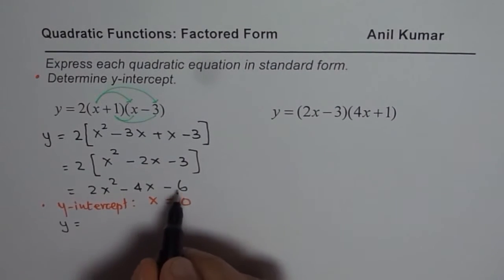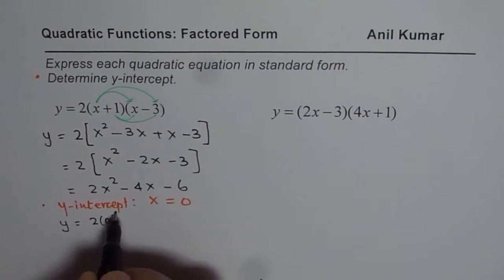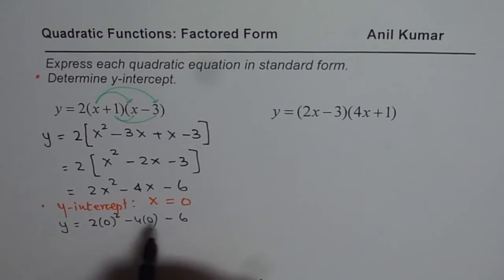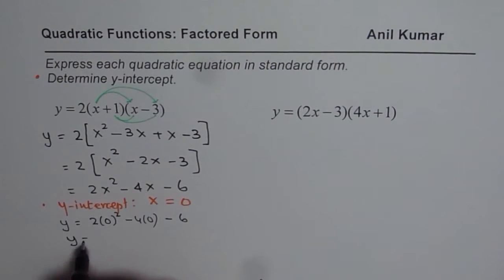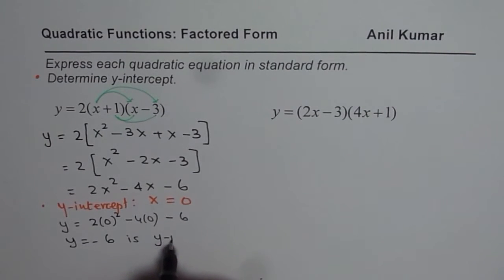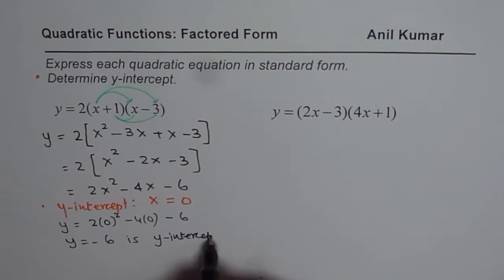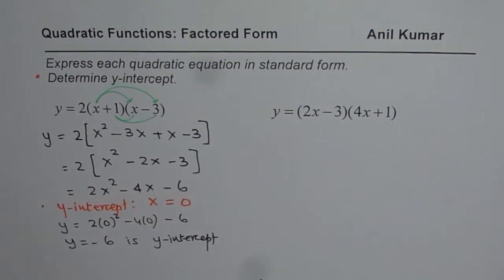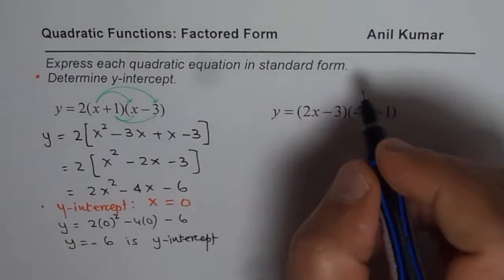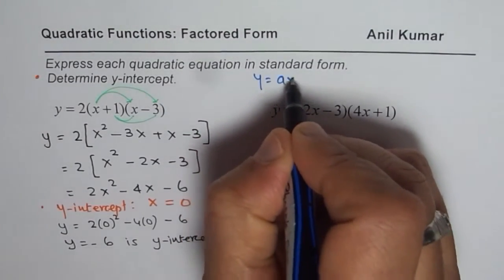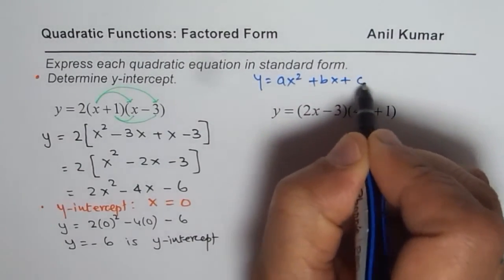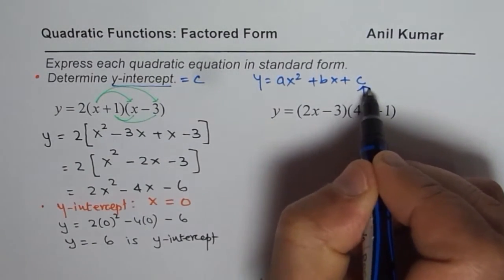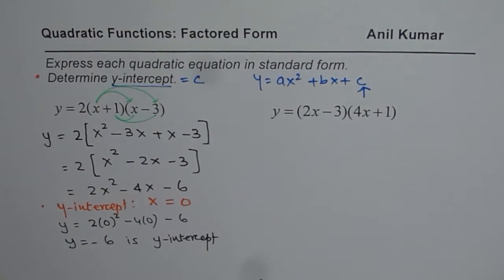Substituting x equals 0: 2 times 0 squared minus 4 times 0 — the first two terms become 0 — and we are left with minus 6. So the y-intercept is y equals minus 6. Remember that from standard form y equals ax squared plus bx plus c, we can easily read the y-intercept: it is simply equal to c.